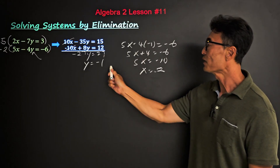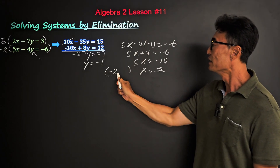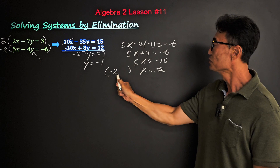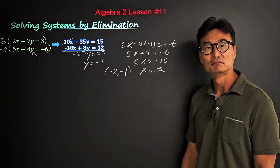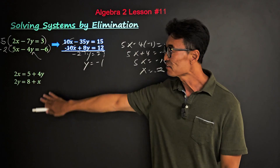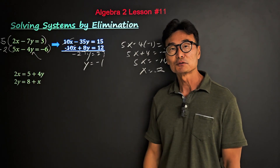Substituting y equals negative 1 into the second equation gives 5x minus 4 times negative 1 equals negative 6, so 5x equals negative 10, meaning x equals negative 2. The final answer is negative 2 comma negative 1.